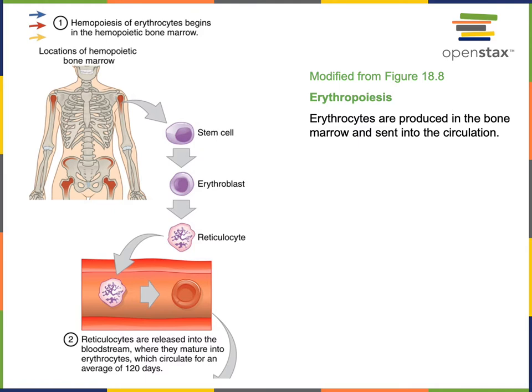Hematopoiesis is the formation of blood cells from stem cells in the red bone marrow, which are known as hemopoietic stem cells. Hemopoietic stem cells are a type of multipotent stem cell in that they can differentiate to produce a wide variety of different cells. The hematopoietic stem cells can differentiate into all of the formed elements of blood.